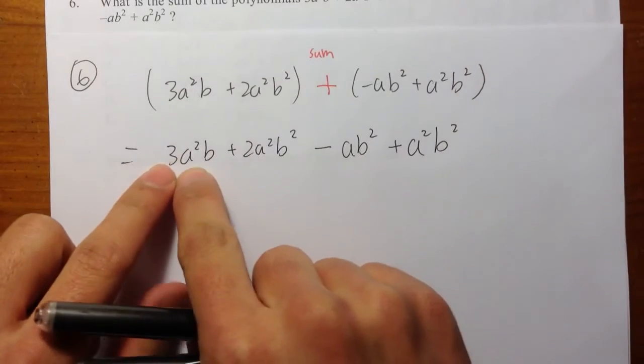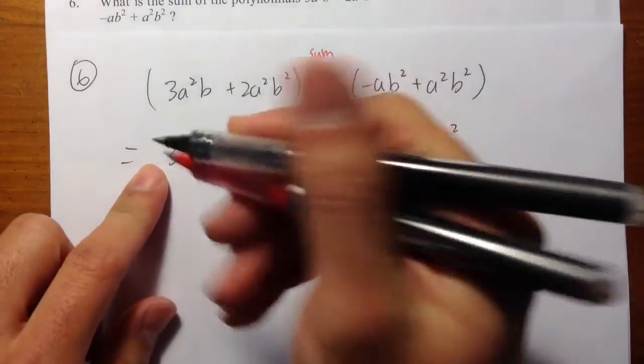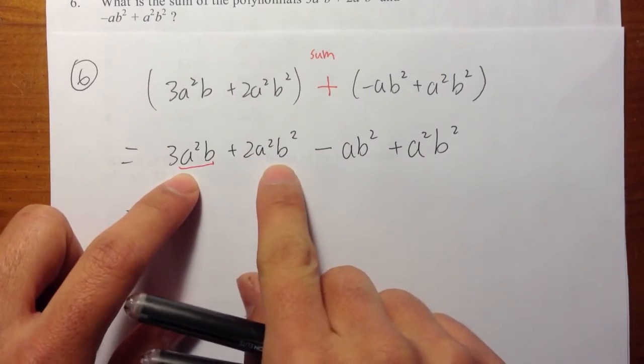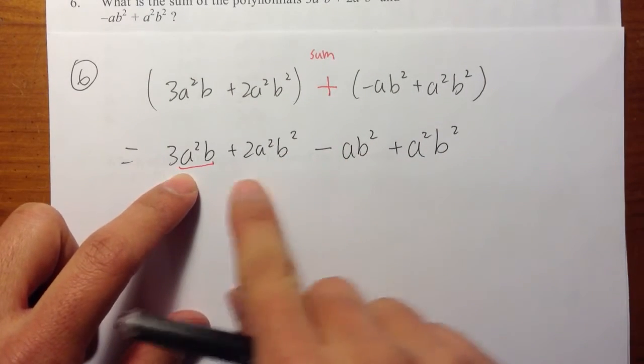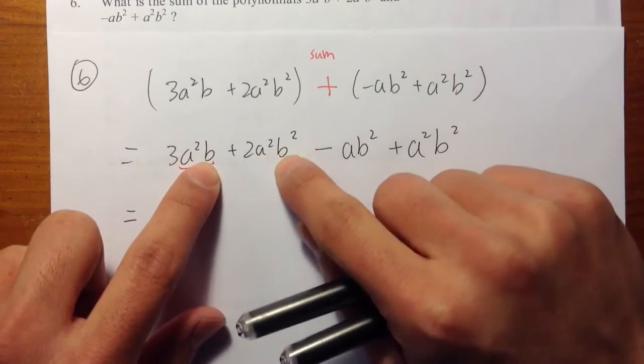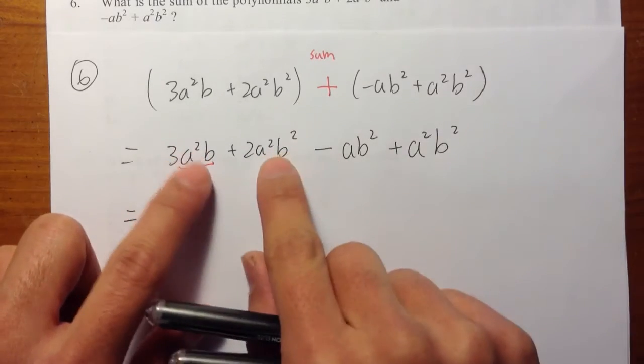Notice that the a², the b, this term right here, there's nothing else that has exactly the same variables and same powers. This one has a², but the powers are different for the b, so these two are not like terms.